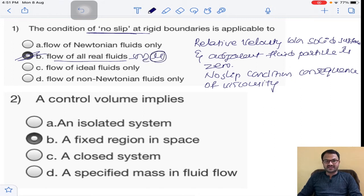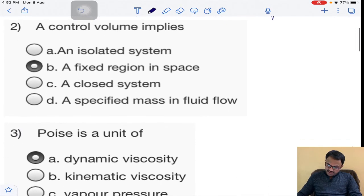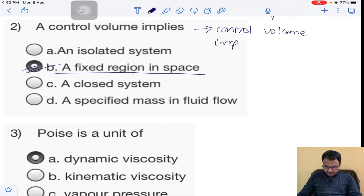This is applicable for all flows of real fluids because real fluids have some viscosity. So when they have some viscosity, they will exhibit no slip condition. Answer is B. Next question: a control volume implies a fixed region in space. This is the direct meaning of control volume.